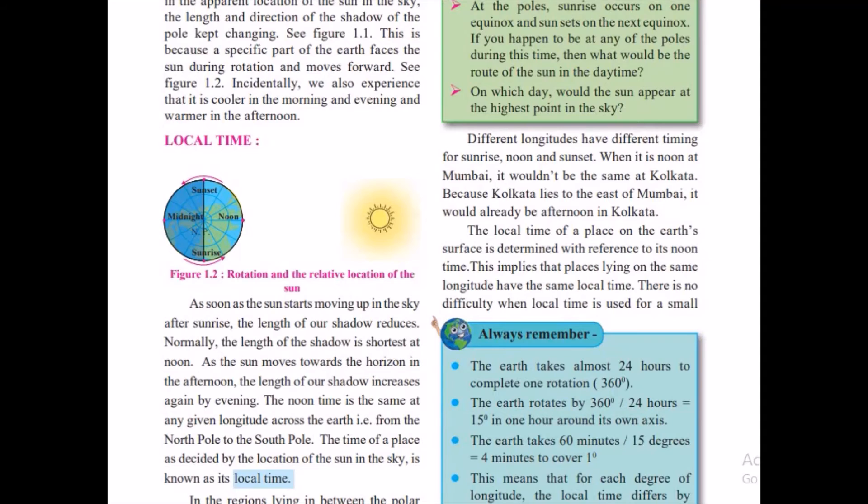The local time of the earth surface is determined with the reference to its noon time. This implies the places lying on the same longitude are having same local time. Please mark this in your book, that the places lying on the same longitude are having the same local time.